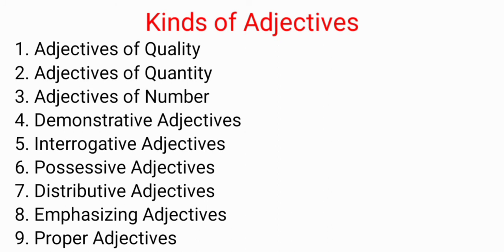Now we will discuss the kinds of adjectives. There are nine kinds of adjectives: adjectives of quality, adjectives of quantity, adjectives of number, demonstrative adjectives, interrogative adjectives, positive adjectives, distributive adjectives, emphasizing adjectives, and proper adjectives.